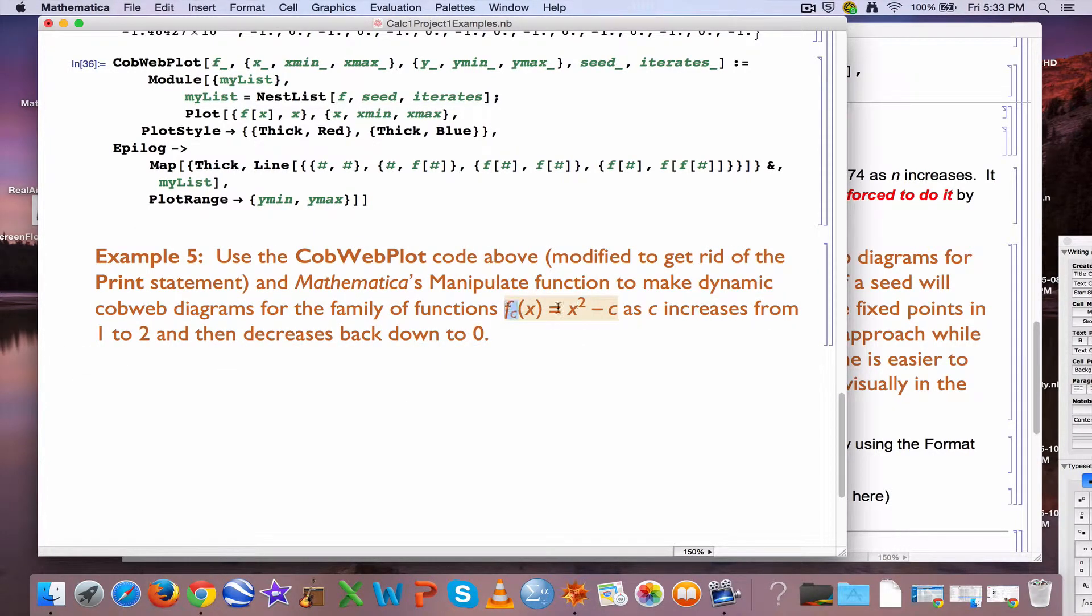Iterating this function here, f sub c of x is x squared minus c. You would iterate that function for any particular value of c, but what's going to really be interesting here in this video, is to see what happens as c changes. For any fixed value of c, you can iterate this function. But using Mathematica's manipulate function, we're going to really see something interesting. We're going to assess what happens as c itself changes.